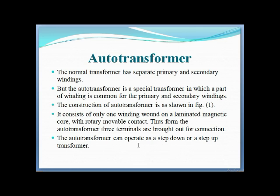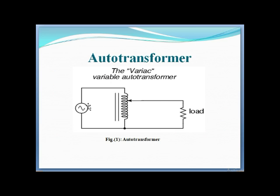The auto transformer can be used as a step-up or step-down transformer — both functions can be achieved with a single transformer. In the diagram, the current supply is connected to the winding, and a load is connected. The output voltage can be varied, which is why it is also called a variable transformer. By changing the tapping point, the output voltage can be changed.